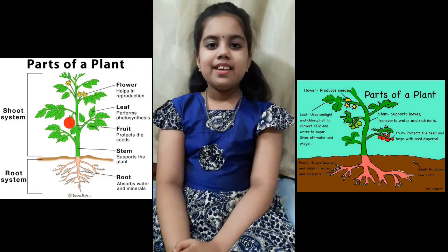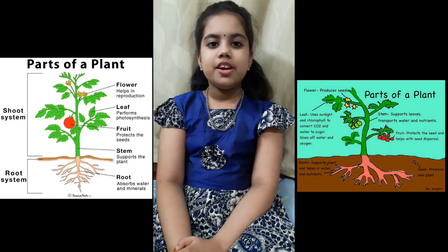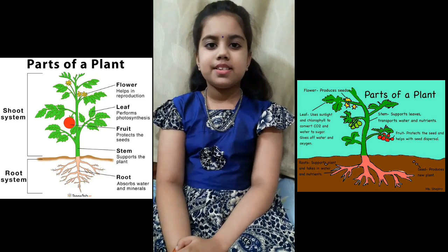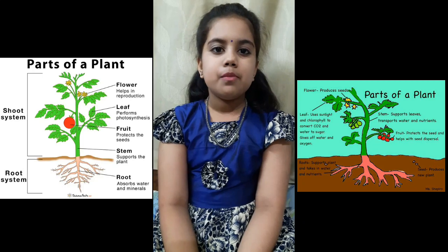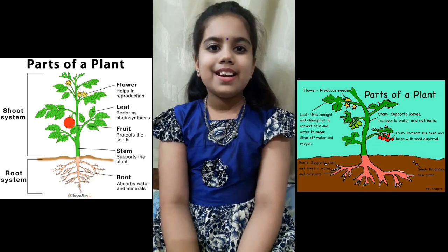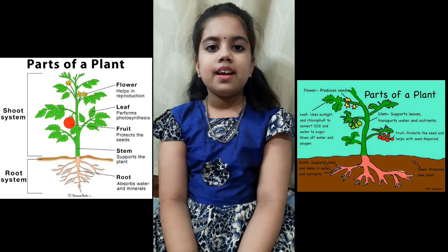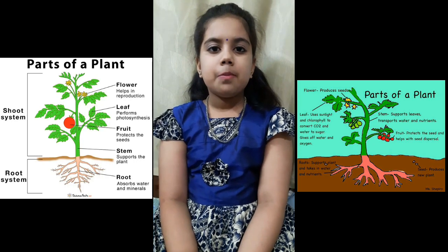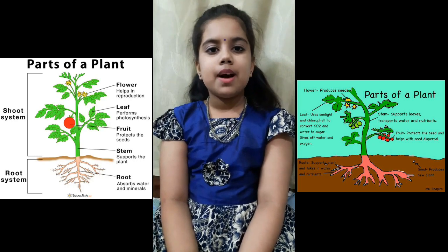Like human beings, plants also have different parts. These parts of the plant help them grow, survive and reproduce. Some parts of the plant are above the ground while some are below the ground.